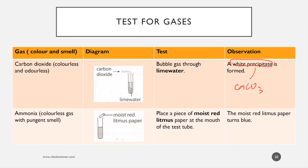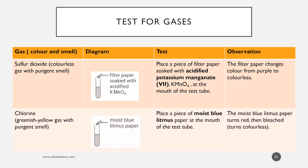For sulfur dioxide, if you see K2Cr2O7 in your question - that's potassium dichromate - it goes orange to green. If you do past papers and see potassium dichromate, it is also used to test for sulfur dioxide. The filter paper soaked in that colored liquid changes color.